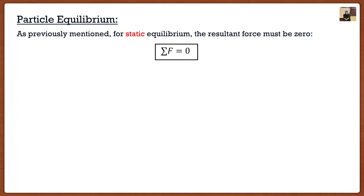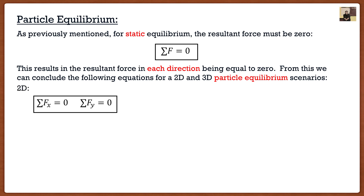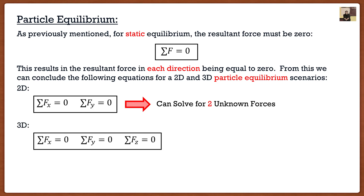We can expand this into two-dimensional and three-dimensional cases. For a 2D particle, if the summation of forces must equal zero, that means all horizontal forces must equal zero and all vertical forces must also equal zero. The same applies for 3D, except forces in the third direction must also equal zero. So for two dimensions, we have two equations — summation of forces in x equals zero and summation of forces in y equals zero — meaning we can solve for two unknowns. For 3D, we have that third component, so we can solve for three unknown forces.